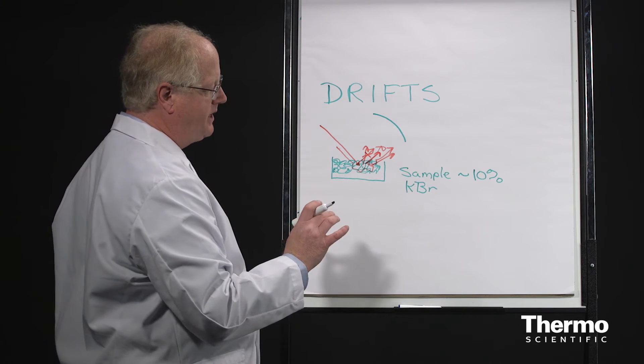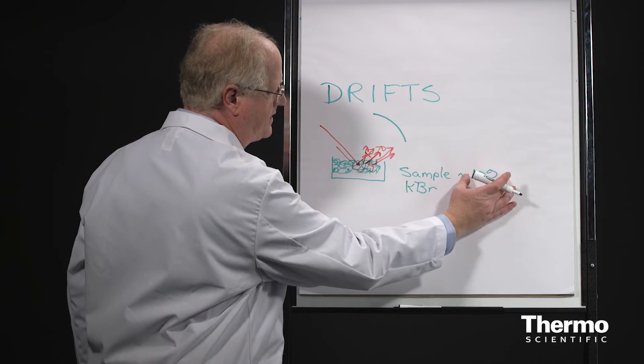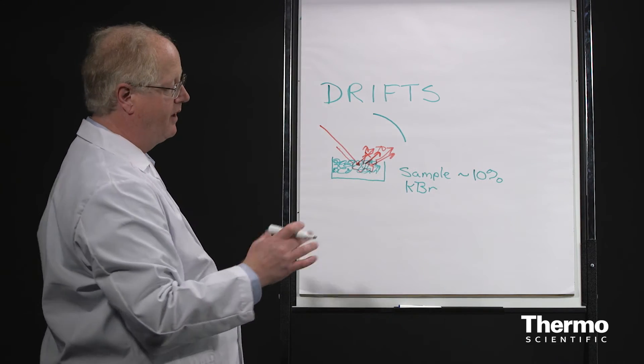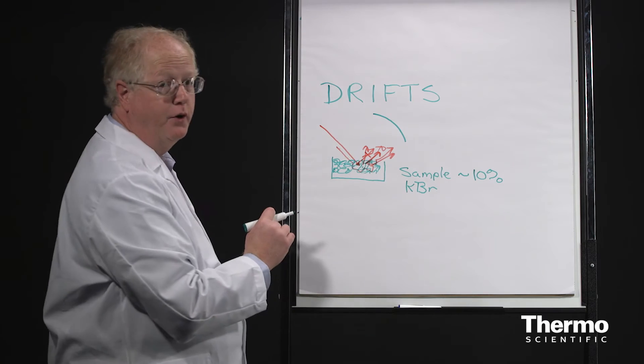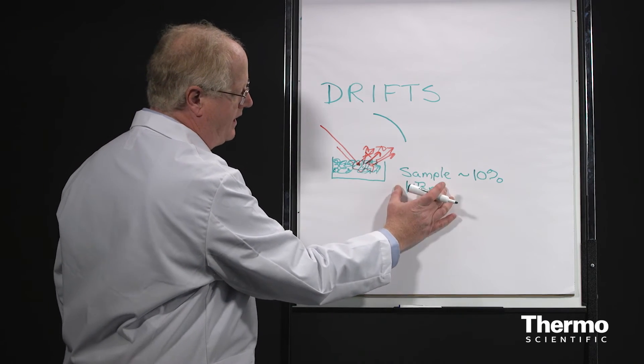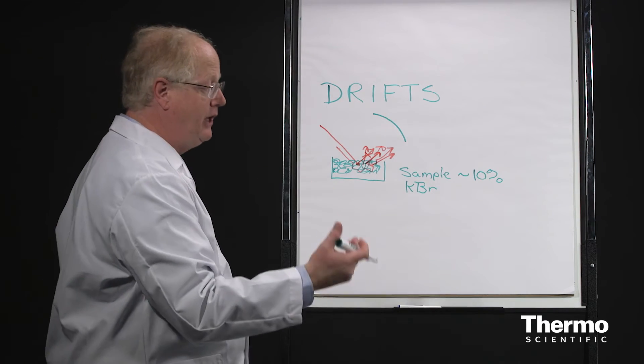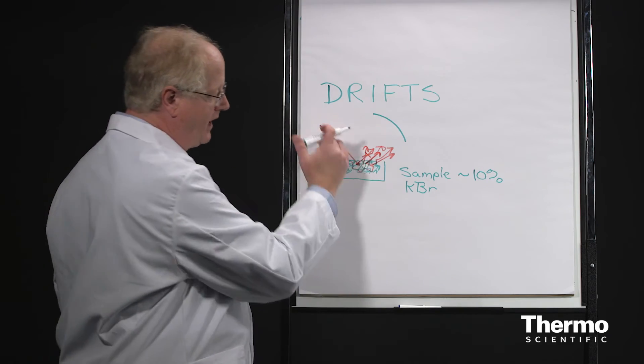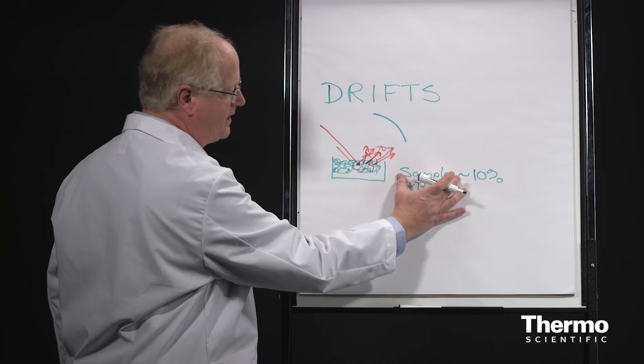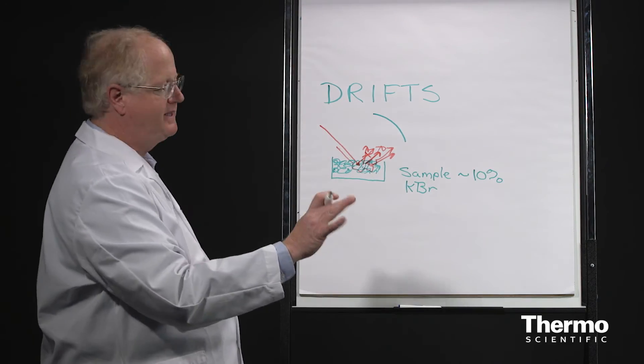So the key points here: the sample is around 10% of the total amount of powder you put in here. The potassium bromide is a diluent. It's there to allow the light to reflect freely around. Too much sample, too strong absorption, bad signals.